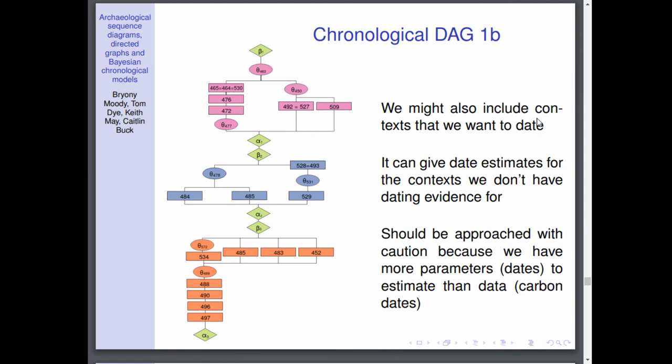However, they should be treated with caution because we have got more parameters that we're trying to estimate, in this case the dates of both the rectangle nodes and the oval nodes. We have more parameters to estimate than we have data, and the data comes from the nodes that have oval shape. So it's something that's possible, it's something we want to explore, but we are aware of its limitations.